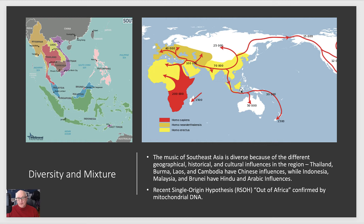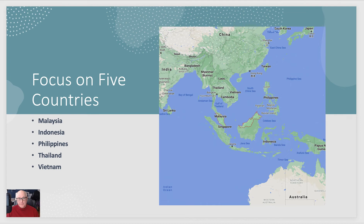Homo erectus, a related species to humans, is in the yellow, and the Neanderthals in the orange area, right around 40,000 years ago. Homo sapiens survive the most. I want you to notice the pattern of migration — it follows, especially on this southern area, the sea coasts. At one time, all of this area was not necessarily underwater. Most of it was actually not, and we'll see that in a few moments.